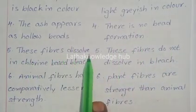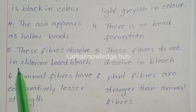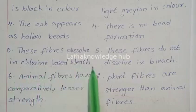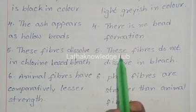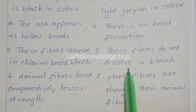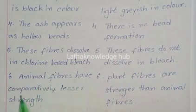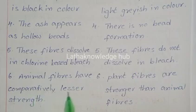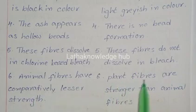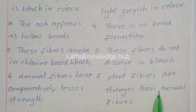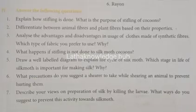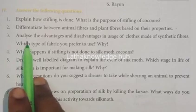Animal fibers dissolve in chlorine-based bleach, while plant fibers do not dissolve in bleach. Animal fibers have comparatively lesser strength, whereas plant fibers are stronger than animal fibers.